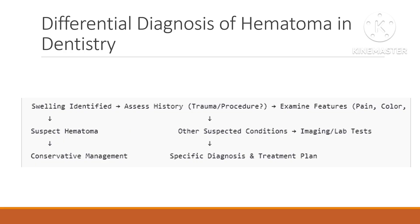For differential diagnosis, take a history of recent trauma or dental procedures, and note systemic symptoms that may indicate abscess or blood disorders. On clinical examination, hematomas are typically non-pulsatile, firm initially and later soft. Bluish or purple discoloration suggests hematoma. Radiographs rule out cysts or bone-related lesions, and ultrasound can differentiate between solid, fluid-filled, or vascular lesions.